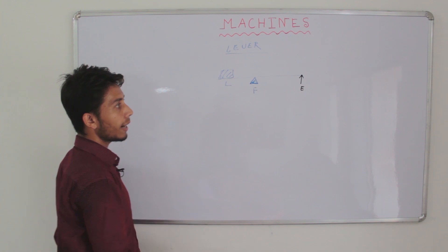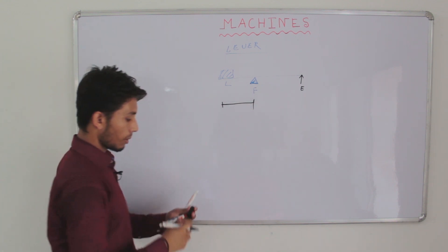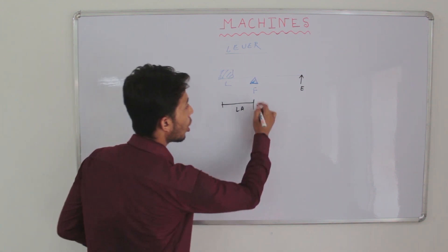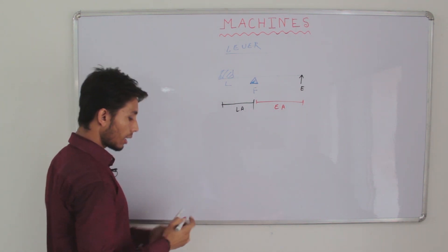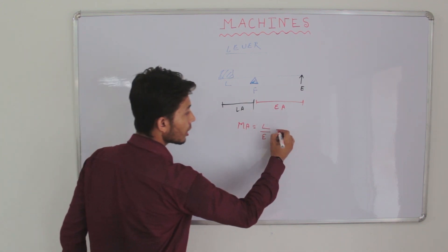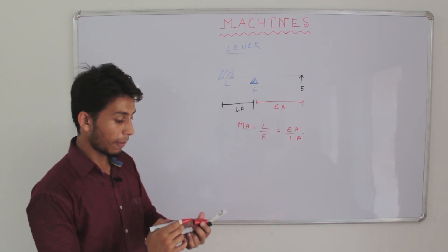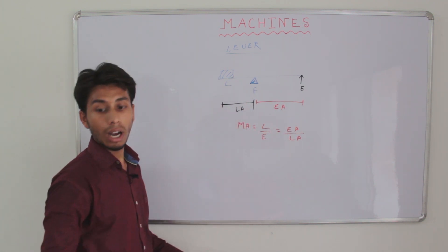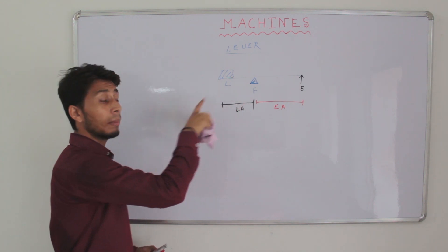The distance of the load from the fulcrum is called the load arm, and the distance of the effort from the fulcrum is called the effort arm. Mechanical advantage in a lever equals the ratio of effort arm to load arm. Thus, mechanical advantage varies according to the lengths of the effort arm and load arm. Based on the positions of the fulcrum, load, and effort, levers are classified into three categories.